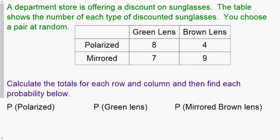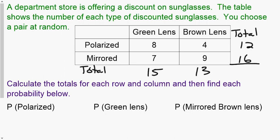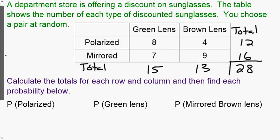A lot of times with probability we deal with tables. This table says a department store is offering a discount on sunglasses; the table shows the number of each type. You choose a pair at random. To work with these tables, one of the first things we need to do is find the total of each row and column. The totals should equal the same amount — in this case, 28.